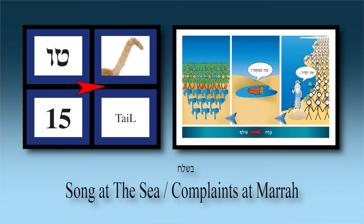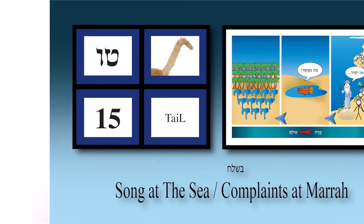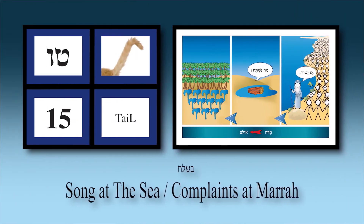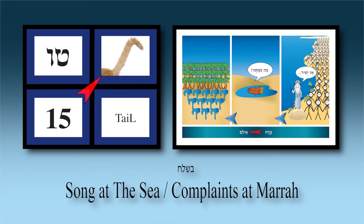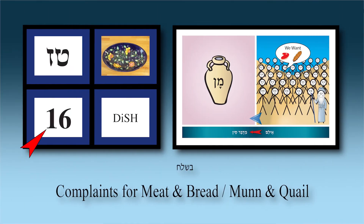How to remember it's in tail: I imagine Moshe conducting Az Yashir using a tail like a conductor's baton. Then I throw the tail back behind me — it lands in water and sweetens it — and from the water spring 70 palm trees and 12 fountains. All in chapter tail 15.